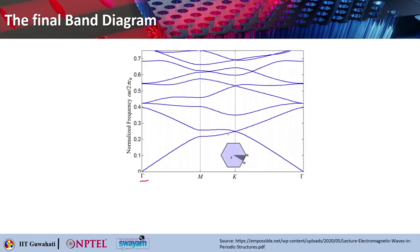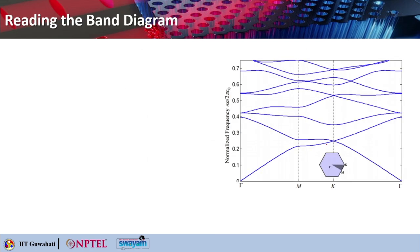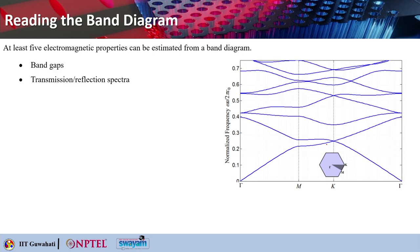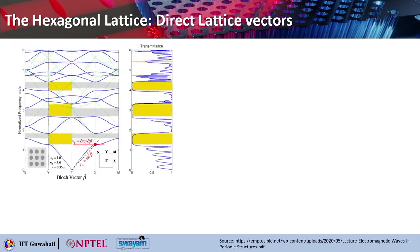Performing the calculation along the gamma → M → K → gamma path gives the band structure. From a band diagram, at least five different electromagnetic properties can be estimated: band gaps, transmission/reflection spectrum, phase velocity, group velocity, and dispersion.